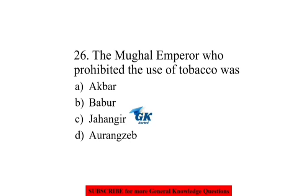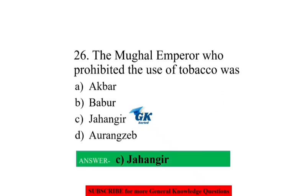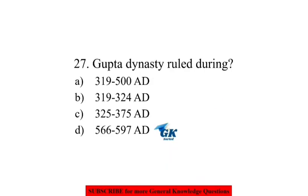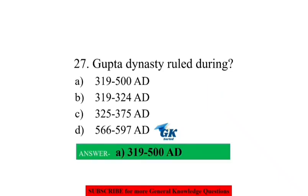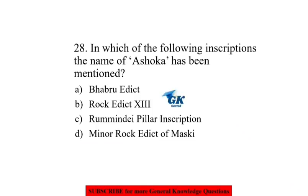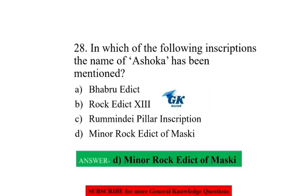The Mughal Emperor who prohibited the use of tobacco was Jahangir. The Gupta dynasty ruled during 319–500 AD. In which of the following inscriptions is the name of Ashoka mentioned? The Minor Rock Edict of Maski.